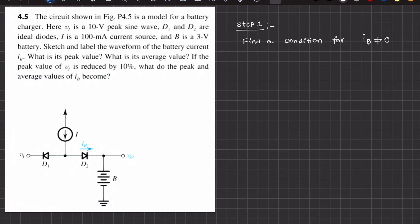Hi friends, here we come up with a new problem. In this problem, we are asked to calculate the peak value and average value of current IB, which is basically charging a battery of 3 volts voltage. This is a somewhat complex problem, so we will go step by step. The very first step is to find a condition for non-zero value of the battery charging current IB.